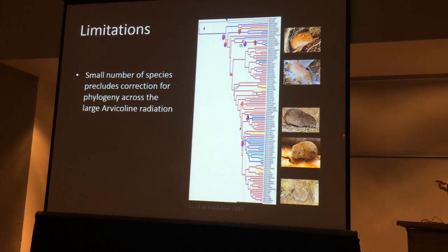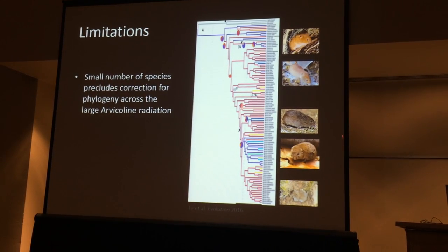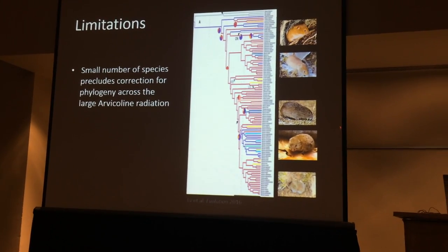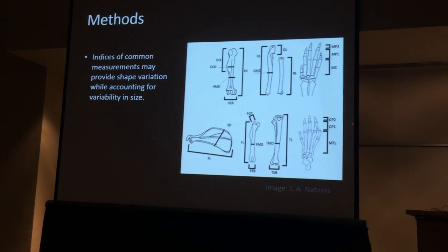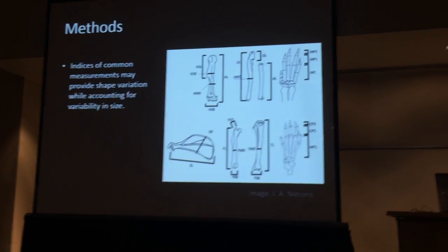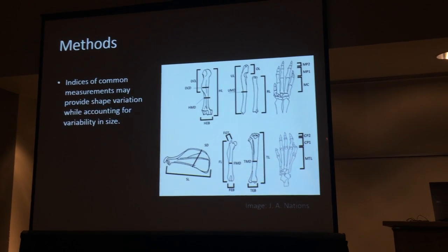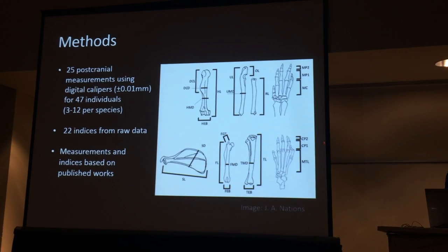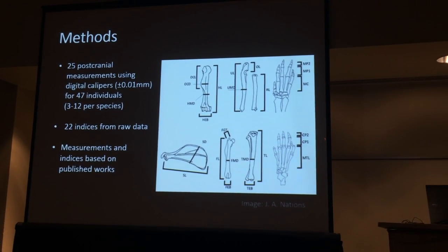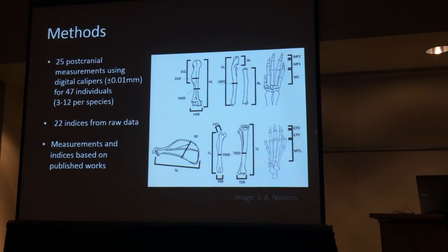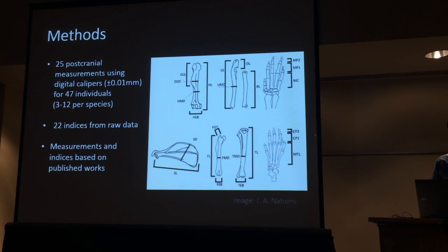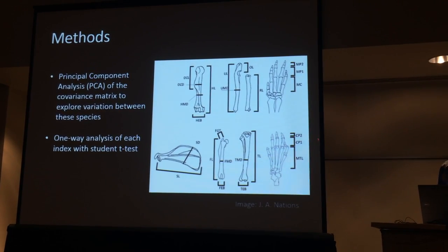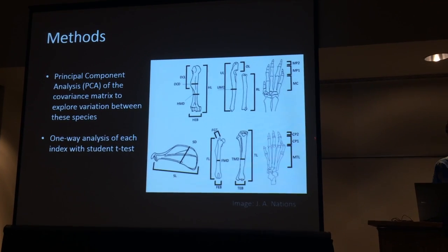I have to recognize that the small number of species precludes any sort of phylogenetic correctness in this study — this is a first pass, just to examine if any morphological variation is there, and once sample size increases the biology can be taken into account. I used published indices for mammal morphology — length-by-width type measurements — doing 25 post-cranial measurements for 47 individuals across all five species, and from these I made 22 indices from the raw data. I used principal components to explore the variation, using the covariance matrix of these raw ratio or index scores, and I also did a couple of univariate analyses.